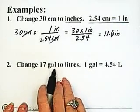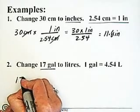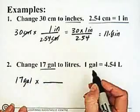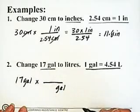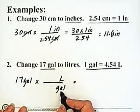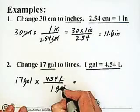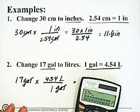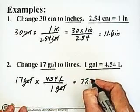Next, we're working on 17 gallons changed to liters. We start with what we know: 17 gallons. We want a relationship between gallons and liters, so we set it up with gallons in the denominator so they cancel, and liters in the numerator because that's what we want in our answer. The relationship between gallons and liters is 1 gallon for 4.54 liters. My gallons cancel, and I'm left with the units of liters. Using the calculator: 17 times 4.54 equals 77.18, so I'm going to go with 77.2 liters.